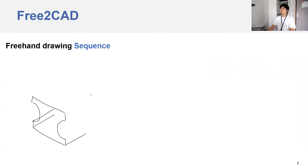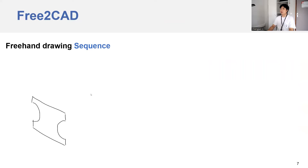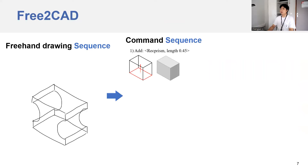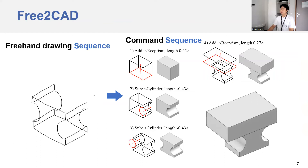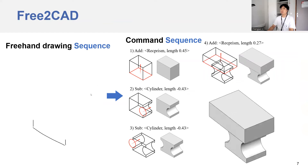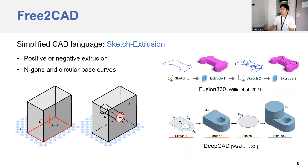We want to reduce the burden of modeling by addressing the two challenges together. So we propose Free2Cat. The goal is to allow users to draw the desired shape with freehand strokes without shape decomposition, and our algorithm parses the drawing sequence into the command sequence which, when executed, produces the 3D shape recreating the input stroke. In this work, we use a simplified CAD language which supports positive and negative extrusion with end-caps and circular base curves. The sketch extrusion command is also favored by existing datasets where complex shapes are obtained.